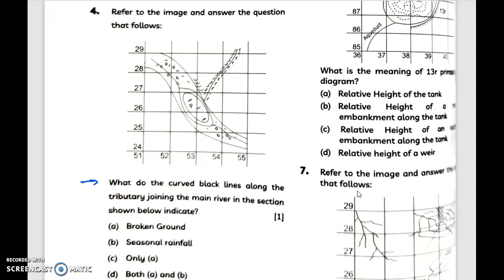These are the options. Answer is option D, that is both A and B - it refers to broken ground and also the seasonal rainfall. Moving to question number five.